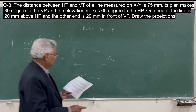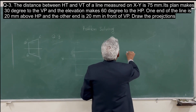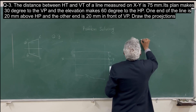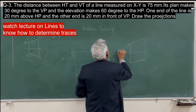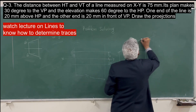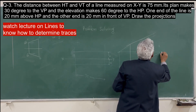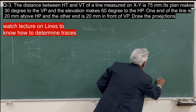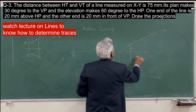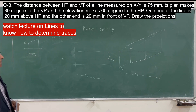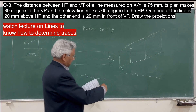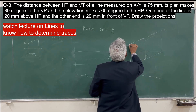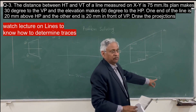The distance between the horizontal trace and vertical trace is 75 mm. This distance is 65, this is 20, and this is also 20. The plan also makes 30 degrees to the vertical plane, and the elevation makes 60 degrees to the horizontal plane. So this angle is 60 and this angle is 30. This distance between HT and VT is 75 mm.